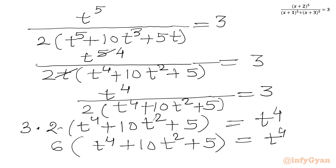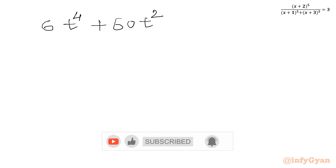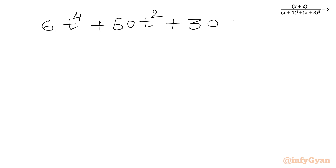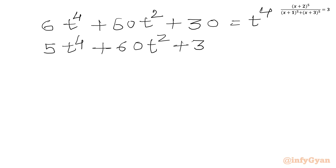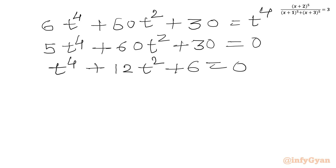Expanding the left-hand side: 6t^4 + 60t^2 + 30 = t^4. Taking all terms to the left: 5t^4 + 60t^2 + 30 = 0. The equation is divisible by 5, so dividing both sides by 5 gives t^4 + 12t^2 + 6 = 0.